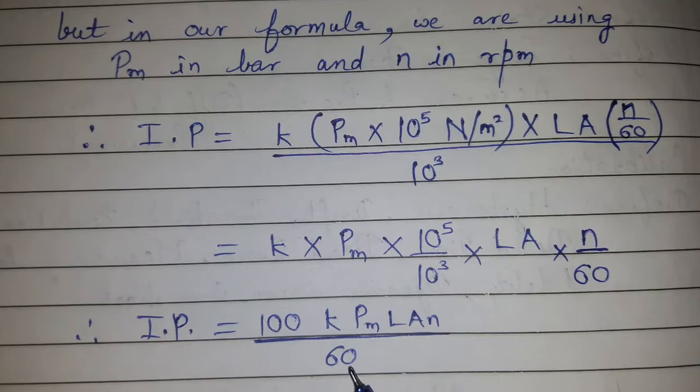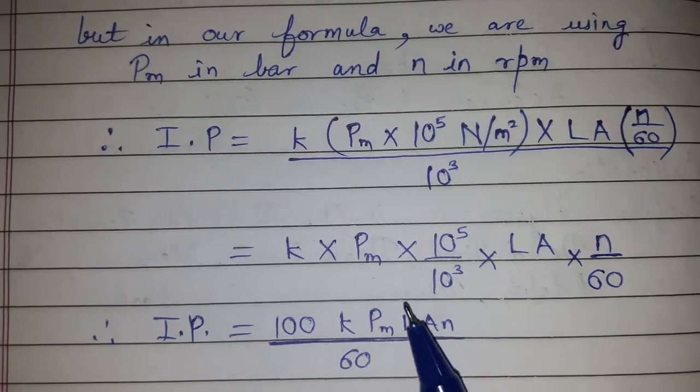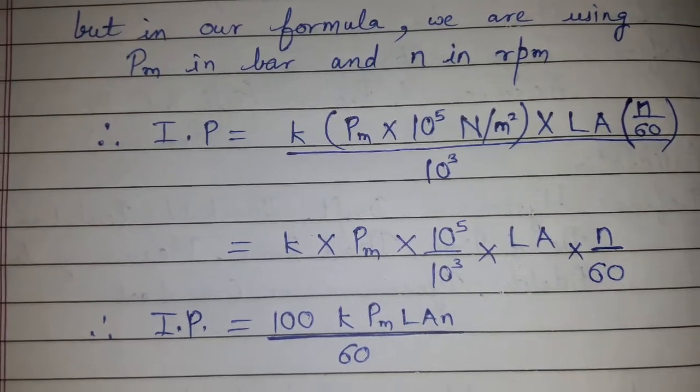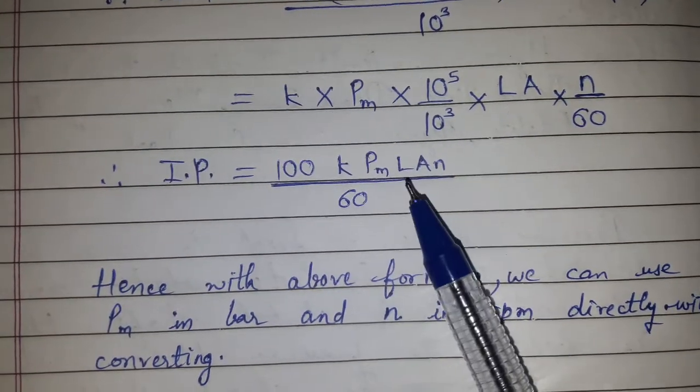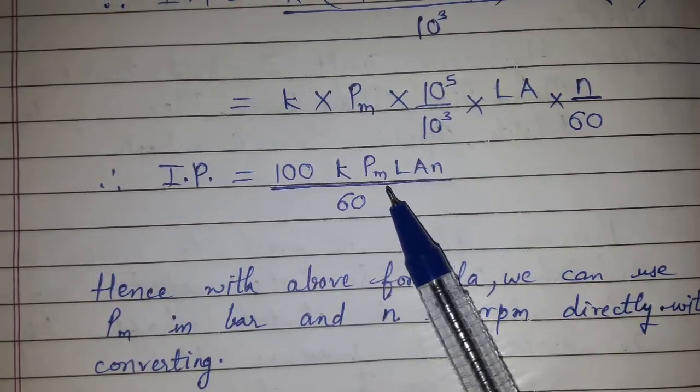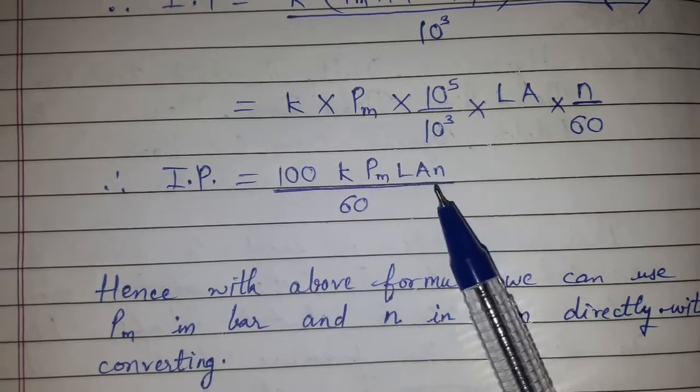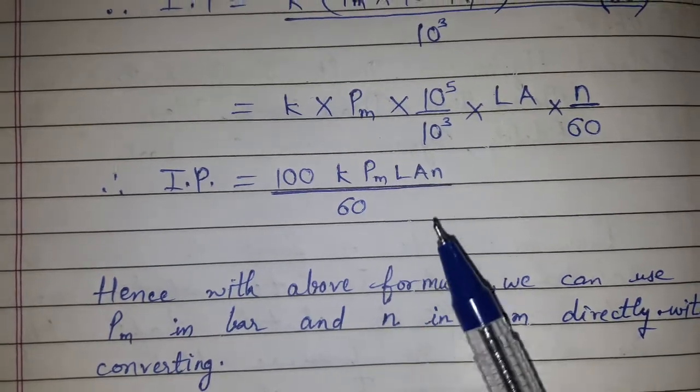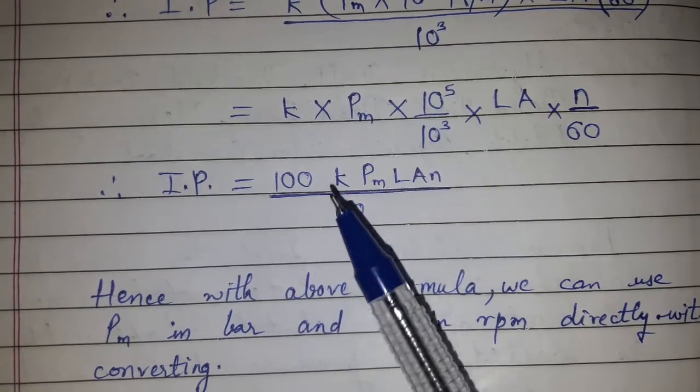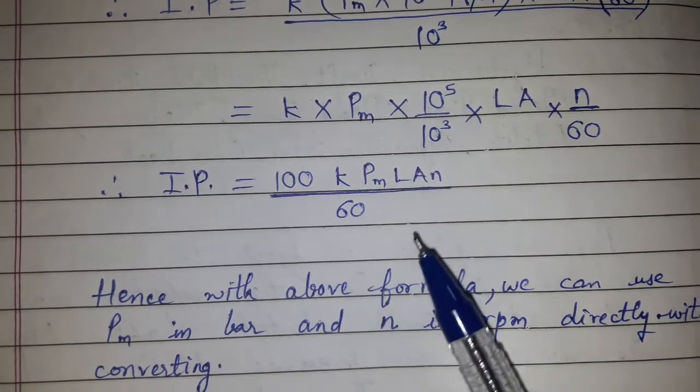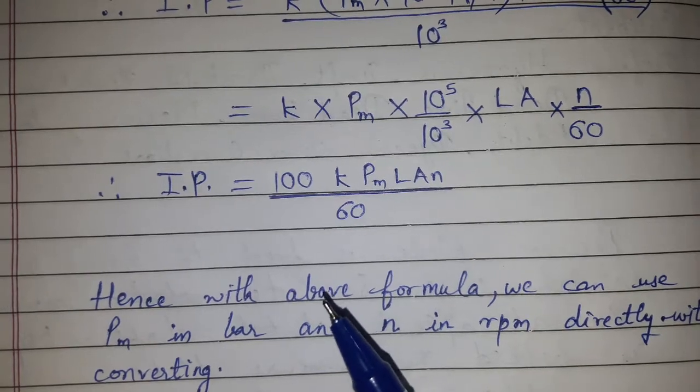This formula helps us to put the value of Pm directly in bar and the value of n directly in rpm, without converting them into N/m² and rps.